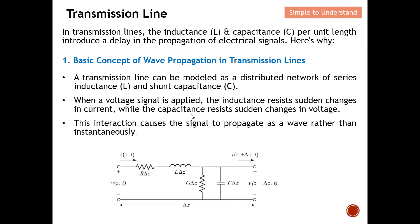The capacitor will resist the sudden change in voltage — it maintains the voltage and resists sudden changes in voltage value. This interaction causes the signal to propagate as a wave rather than instantly. Without the L and C, the instantaneous voltage would appear at the other end without propagation. But because of the L and C, it behaves like a wave, and the wave needs to propagate from point A to point B.